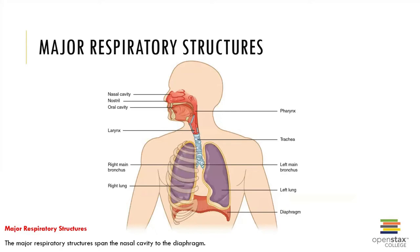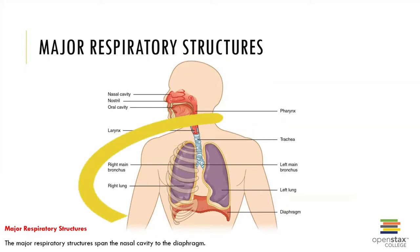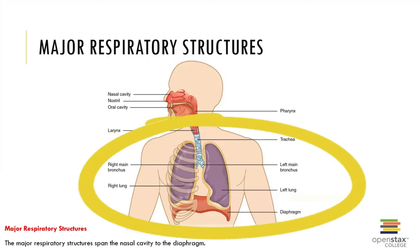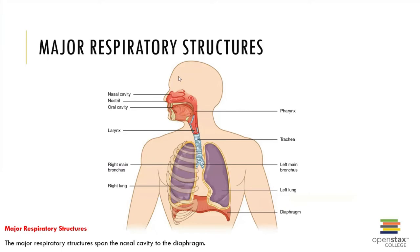There are two anatomical divisions of the respiratory system: the upper respiratory tract and the lower respiratory tract. The upper respiratory tract includes the nose, the nasal cavity, the paranasal sinuses, and the pharynx. The lower respiratory tract is responsible for conducting air to and from the gas exchange surfaces.